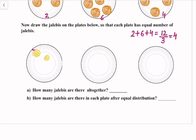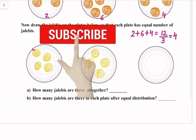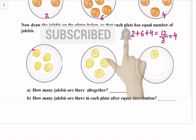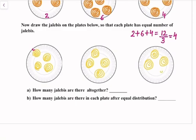Now we draw 4 jalebi on each plate: one, two, three, four on the first plate; one, two, three, four on the second; and one, two, three, four on the third. How many jalebi are there altogether? There are 12 jalebi. How many jalebi are there in each plate after equal distribution? Four jalebi in each plate.